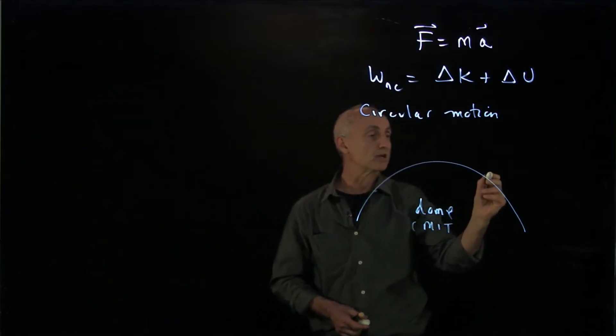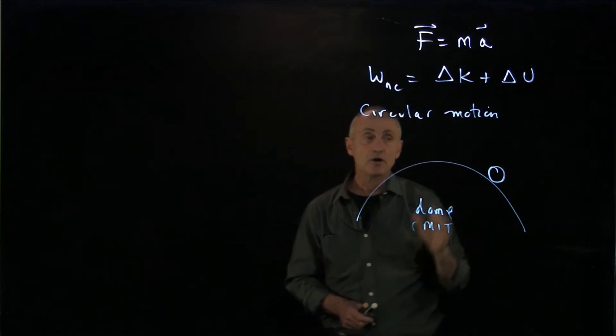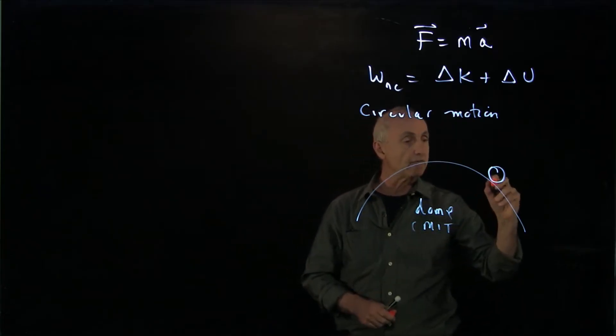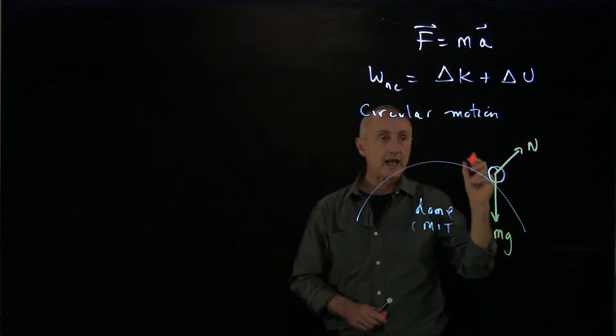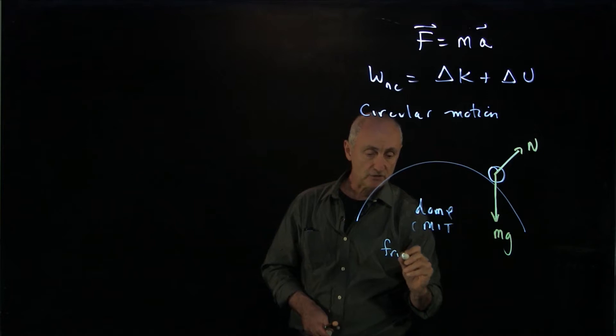Let's say we have an object that's on the dome. Now, let's write out a free body diagram for this object. So we have our gravitational force, we have a normal force, and let's just assume that our dome is frictionless for simplicity.